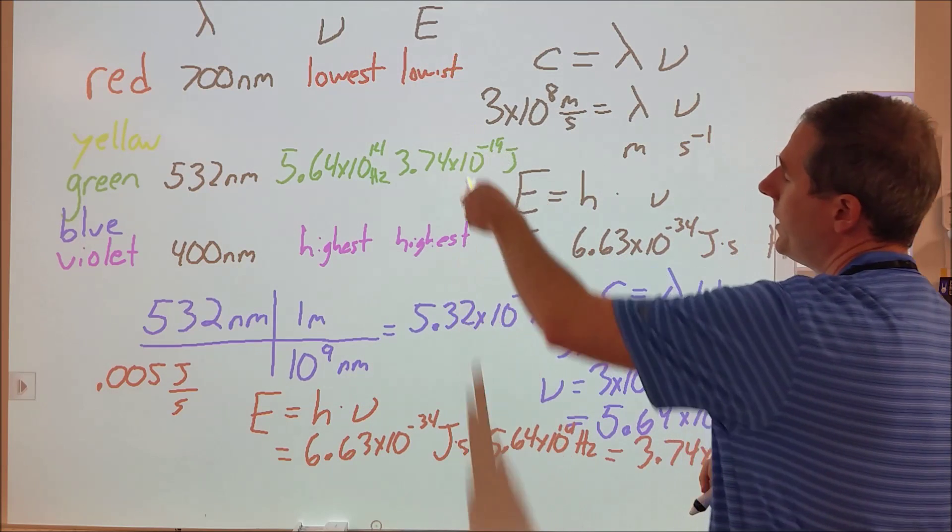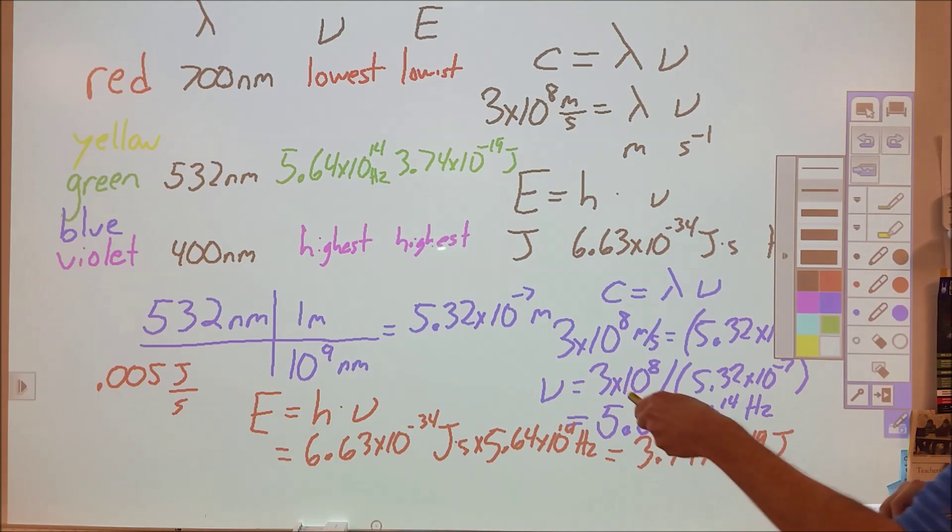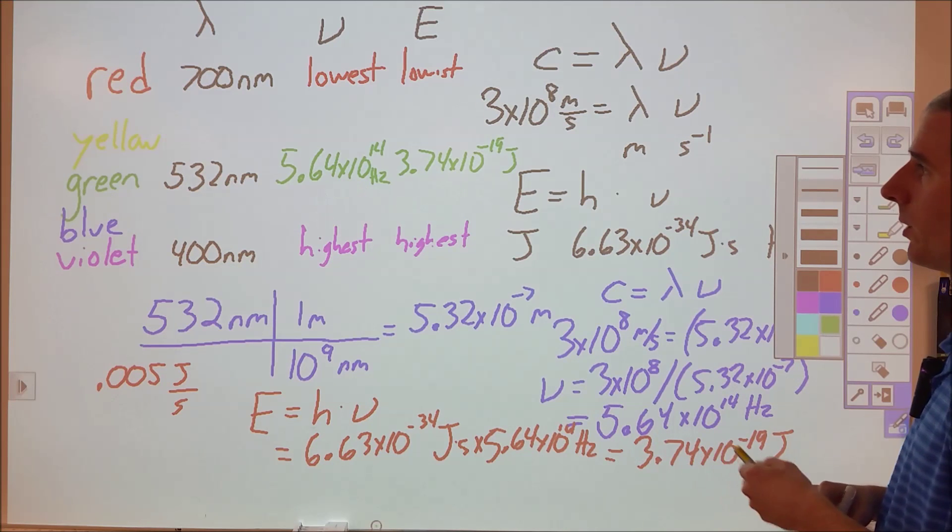We know that our energy of red light is going to be lower than that, and our violet light is going to be higher in energy and higher in frequency than our green values.